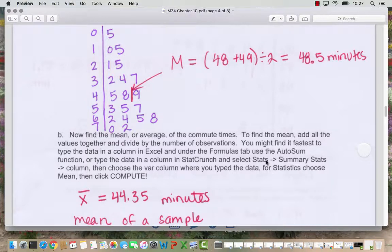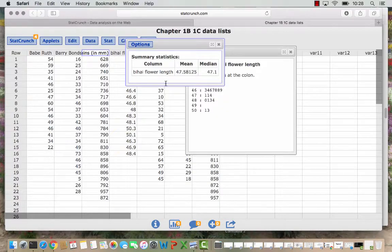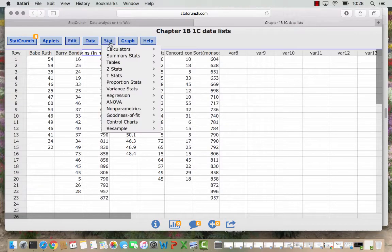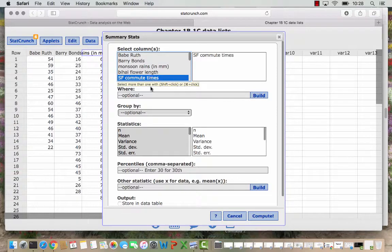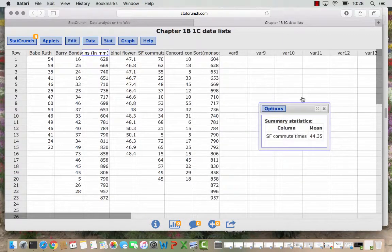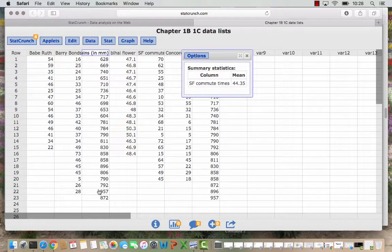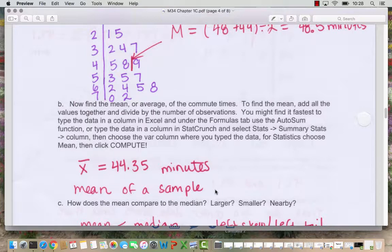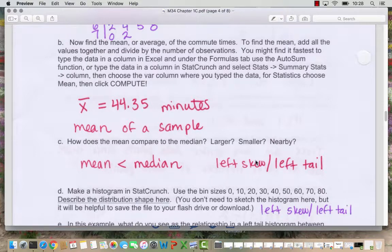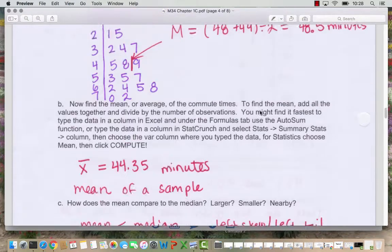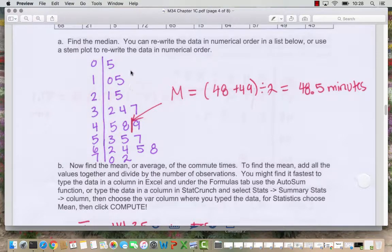So now to find the mean we add them up and average. If you want to do it in StatCrunch you could follow these directions here just like we did in the flower data. You go to stats, summary, stats, column and then choose mean. So we go stat, summary stats, columns and these are the SF commute times and then we just choose the mean. And StatCrunch has quickly added them all up and divided by 20 for us to get that 44.35. And so that's the mean of our sample. And then how does the mean compare to the median? So remember the median was 48.5 minutes. The mean is a little bit lower at 44.35 minutes. So in this case we say the mean is less than the median. And notice our distribution is the left skew or left tail. If you come back and look at our stem plot here you see there's a tail out to the left side.